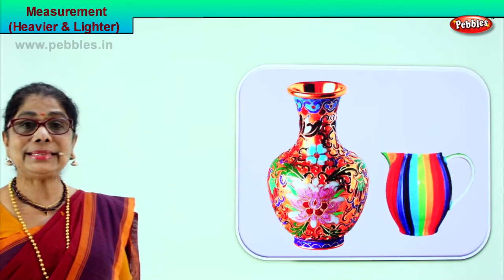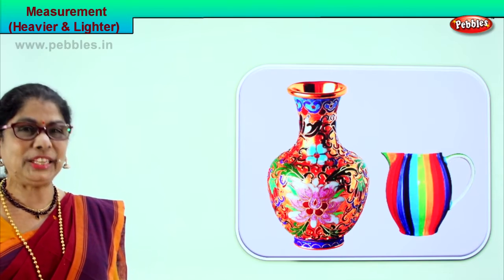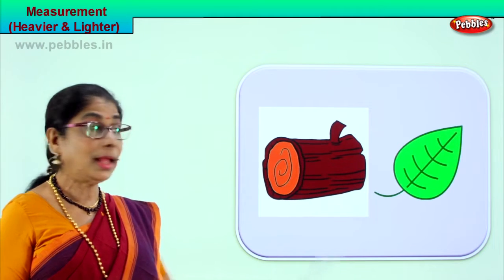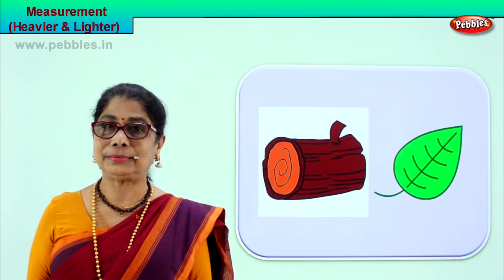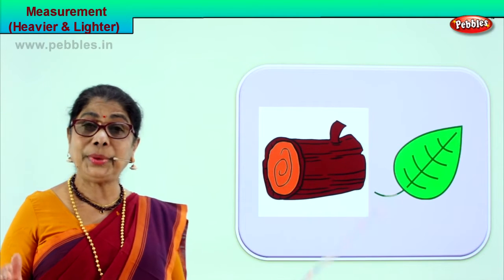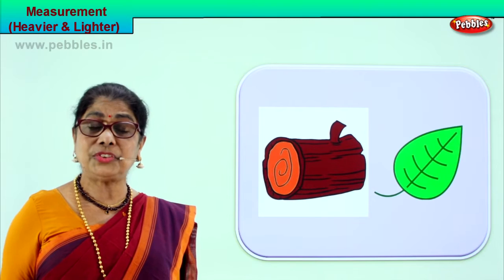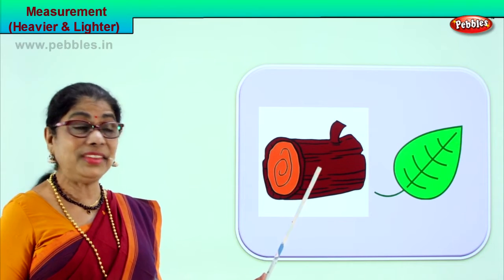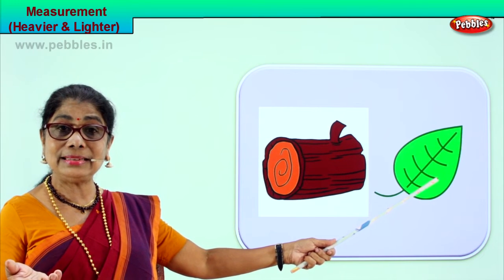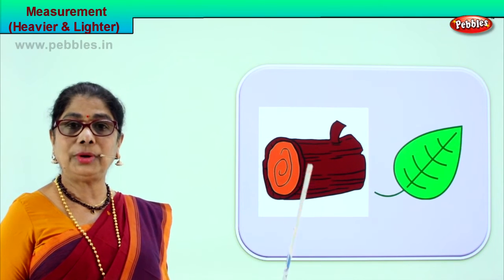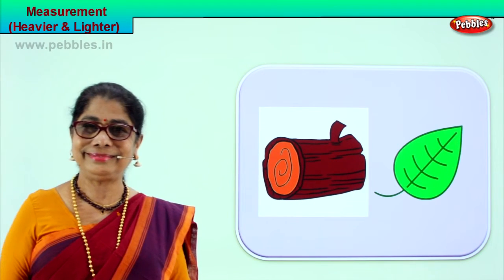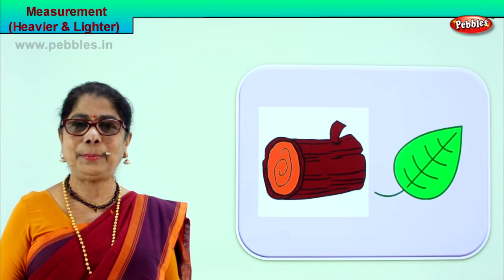Heavier, lighter. Let's take another picture. Let's compare these two and see. Here you have a log of wood and you have a single leaf. You put them on the machine — the log of wood, which is a piece of the trunk of a tree, is heavier than a single leaf. The leaf is lighter than the log of wood.